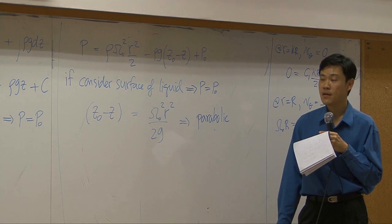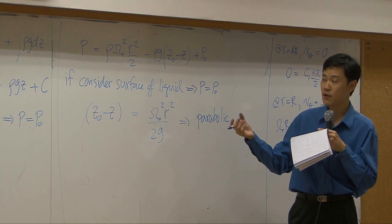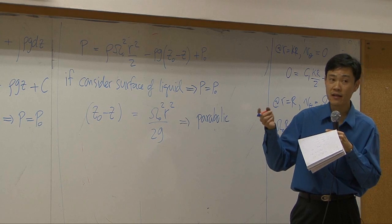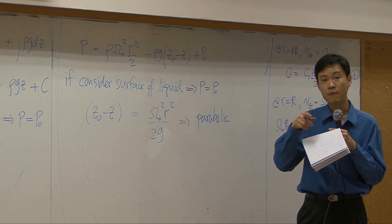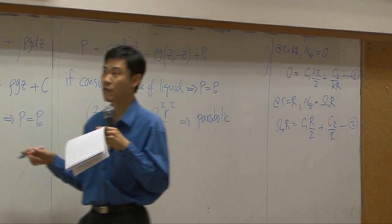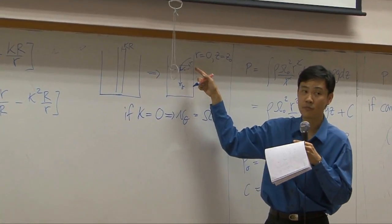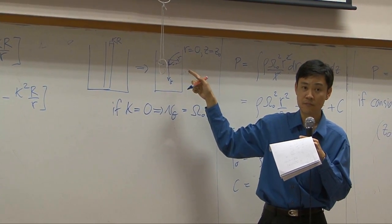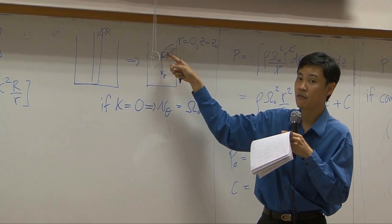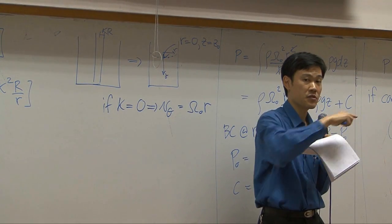In other words, if you plot this equation with respect to the distance from the center r, you will get a profile of the water surface. That profile forms a parabolic function. So if you want to understand how this vortex is formed, you can simply use this equation.